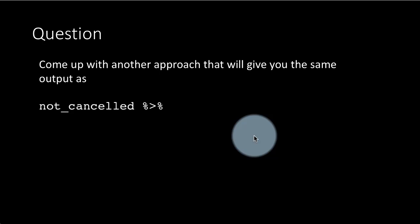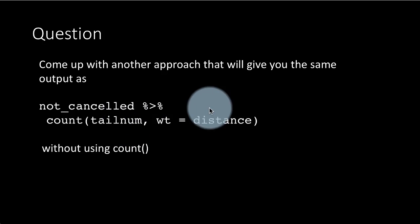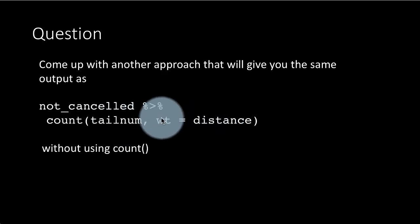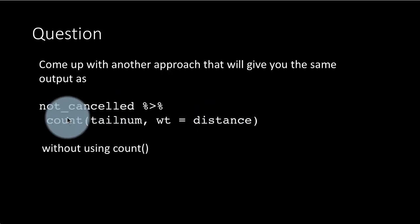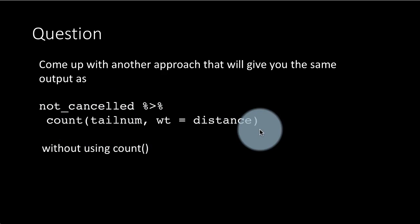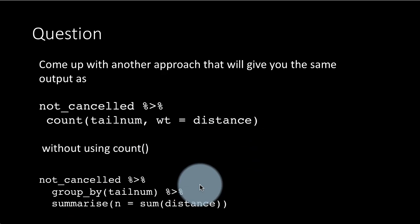Come up with another approach that will give you the same result as count tailnum weight equals distance. That is, you want to count how many times each tailnum occurs. But as you are counting, weight each of them by the distance. In other words, if you didn't put this weight equals distance, it's going to count each tailnum only once. Whereas if you weight it by distance, then the tailnum will be weighted by the distance that it made on a particular flight. And this will effectively count the total distance traveled by each tailnum. So obviously, the way you're going to do that is to group_by tailnum and sum the distance. These two things are really doing the same thing.